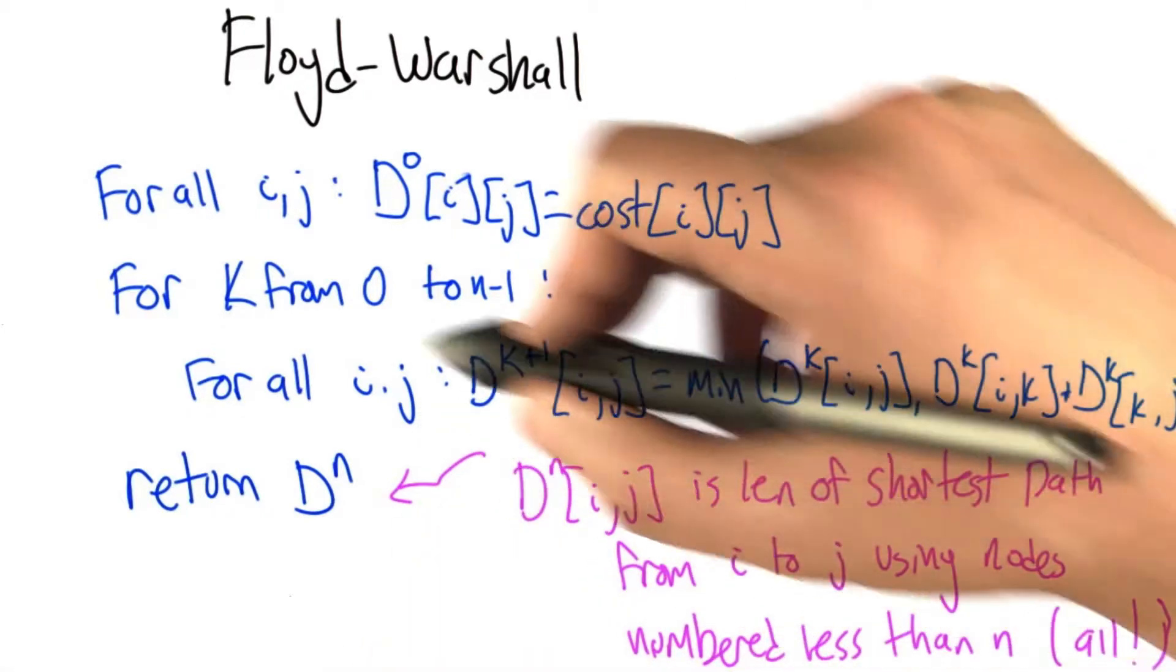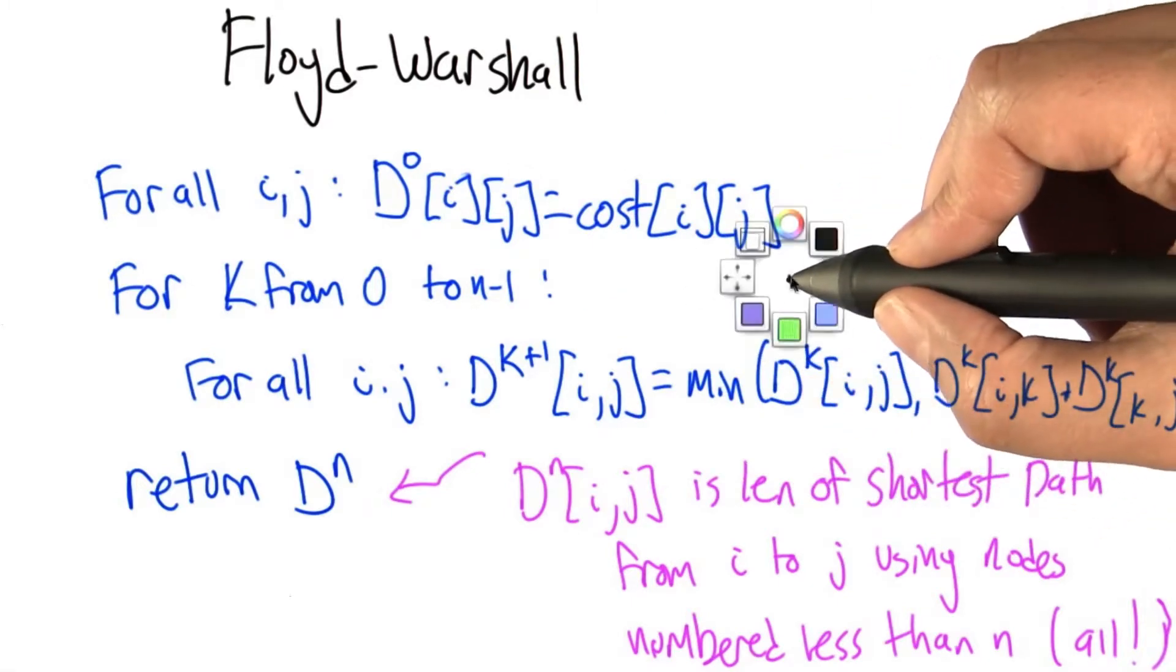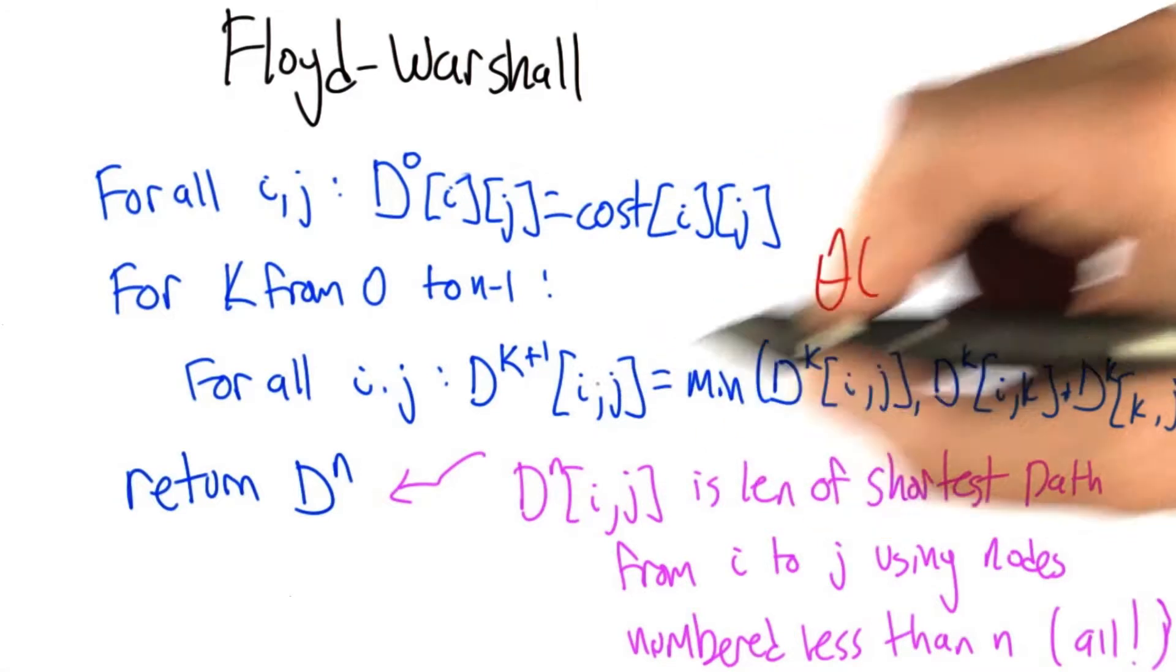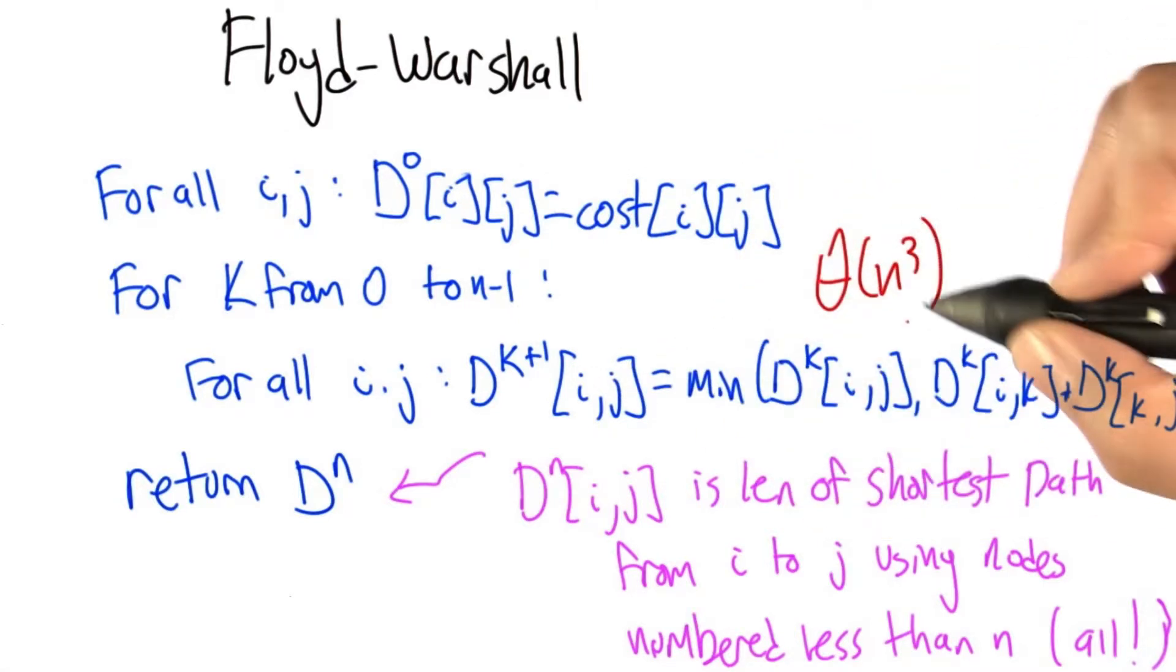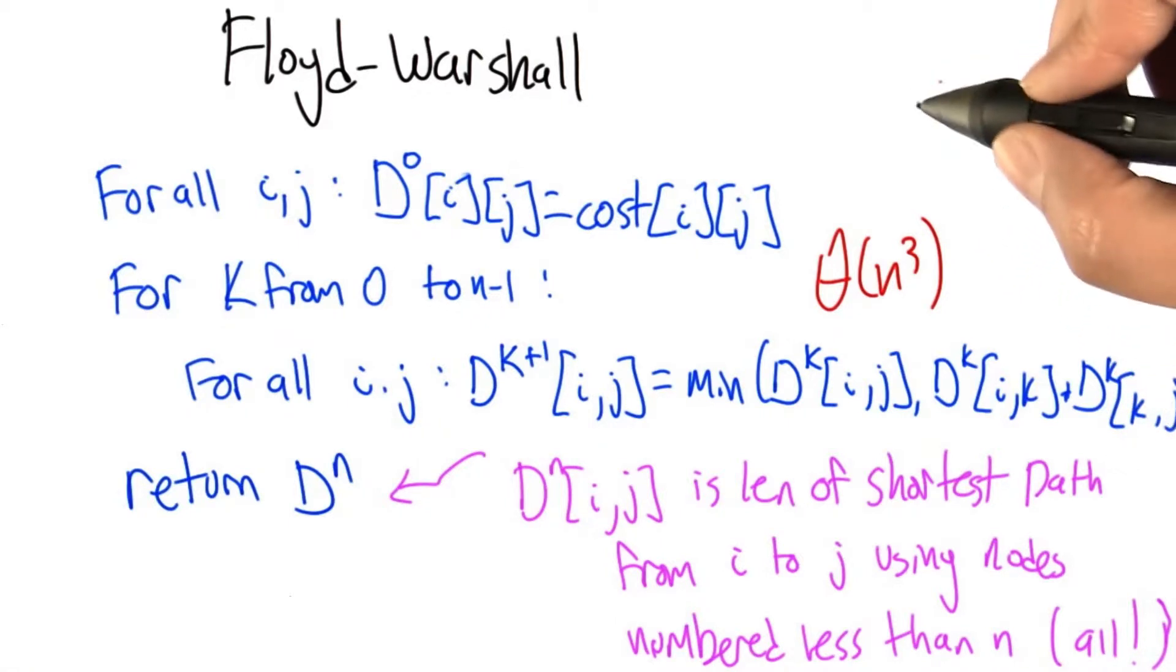If you think about what's going on here, this initialization step runs over all pairs of nodes, so that's n-squared. This loop runs over all pairs of nodes n-squared, but it does this for each value from 0 to n-1. So all together, we're talking about n times n-squared or n-cubed.